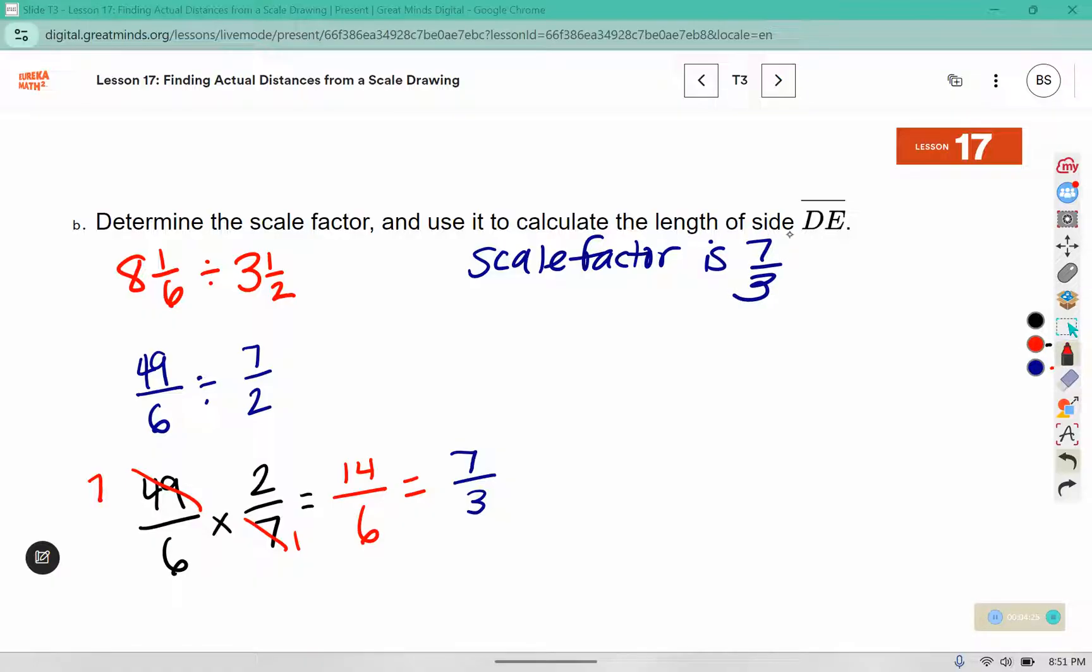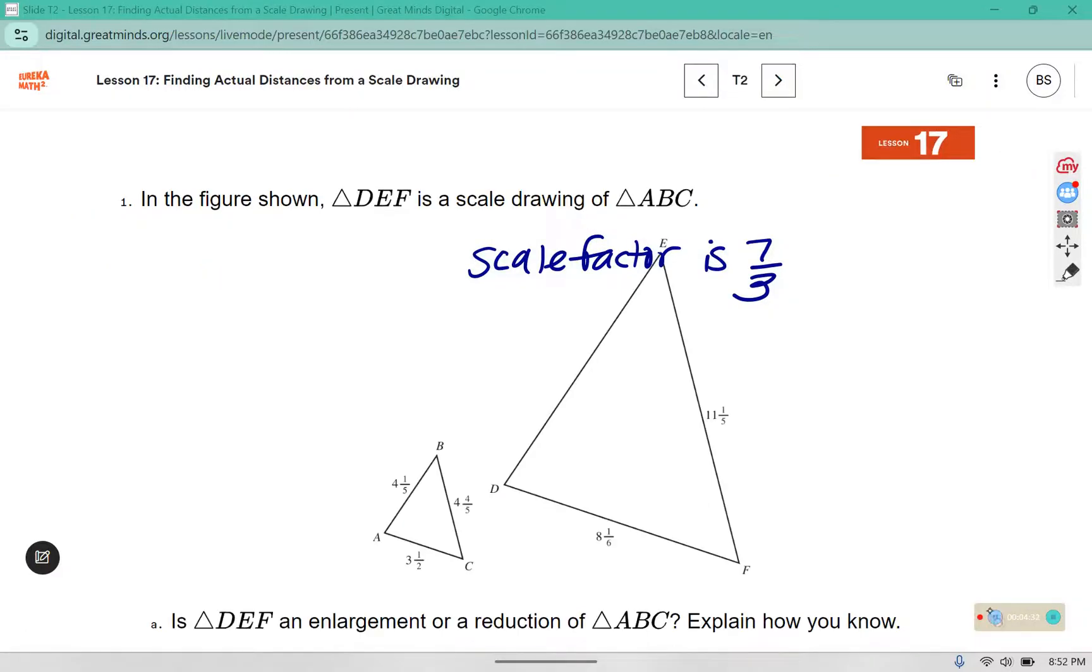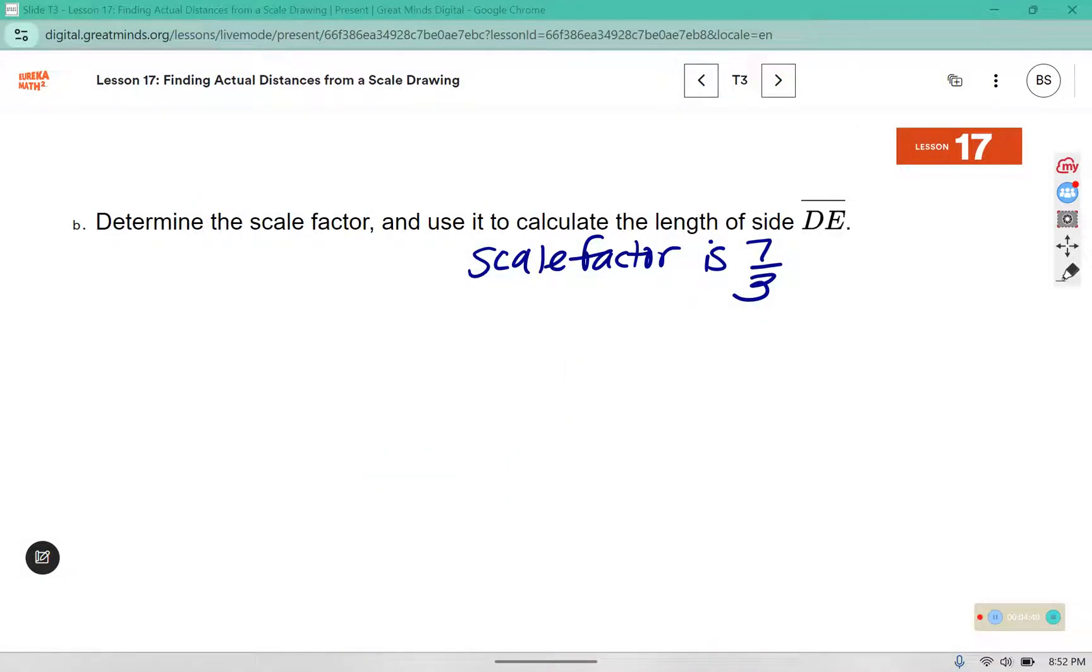But I still need to use that to find the length of DE. Side DE corresponds to side AB. So I'm going to use 4 and 1 fifth and the scale factor to figure out what the length of side DE is. So once I have the scale factor, I'm going to take the original side length and multiply by the scale factor to figure out that missing side length.